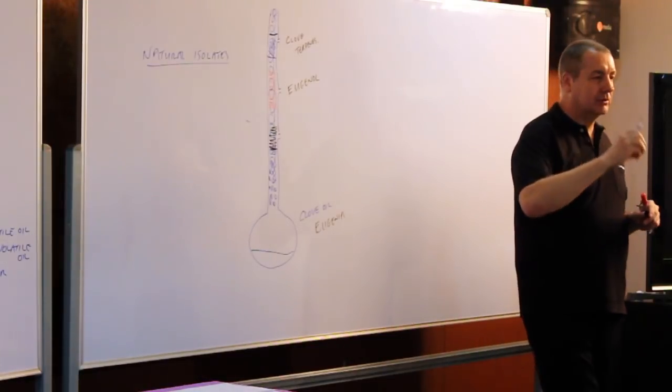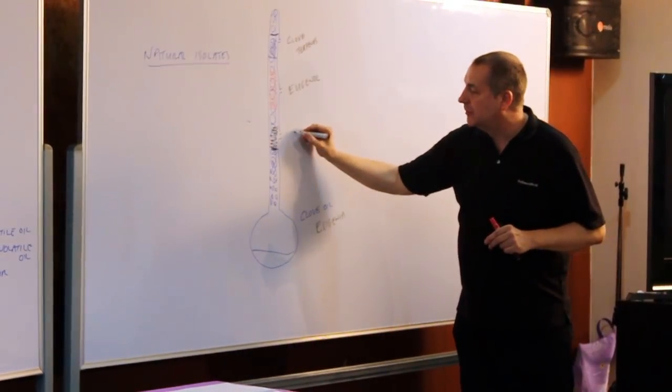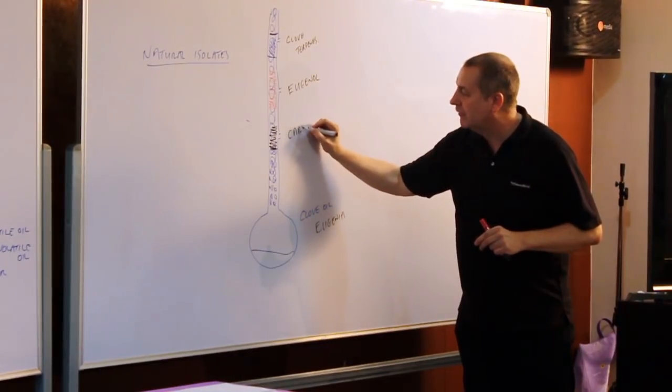And last but not least, we get the sesquiterpenes. These are bigger molecules. And we can call it clove sesquiterpenes, but the main one is called caryophyllene.